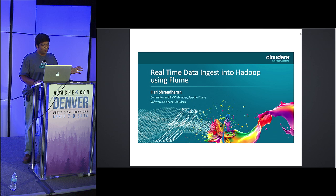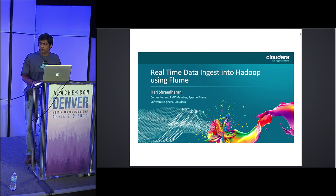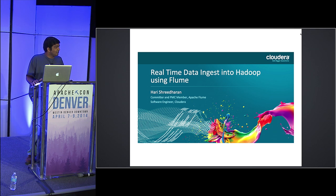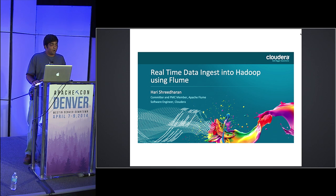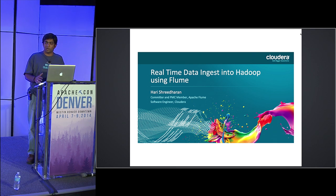Before we go into what Flume is and all of the concepts related to Flume, let's talk about the legacy of Flume. Flume started off as a Cloudera GitHub project. One guy at Cloudera, when Cloudera was like 15 or 20 people, started hacking on this thing to get data into Hadoop. This was in response to customer complaints that writing a whole lot of data into Hadoop causes the namenode to choke when there are MapReduce jobs running.